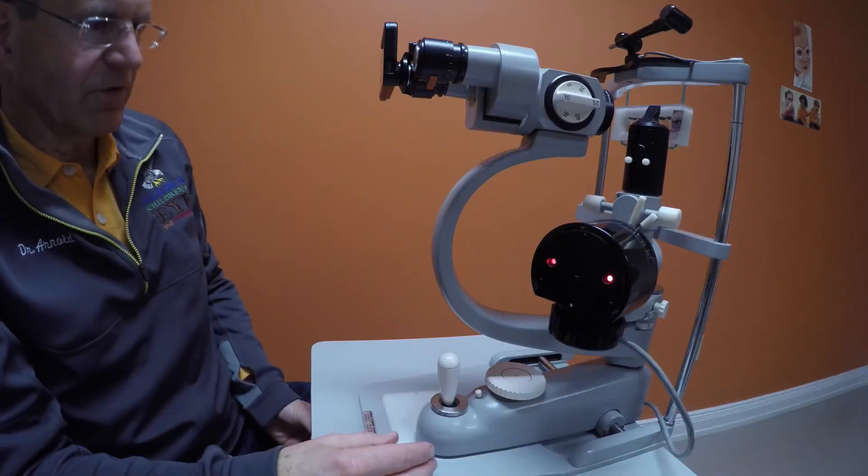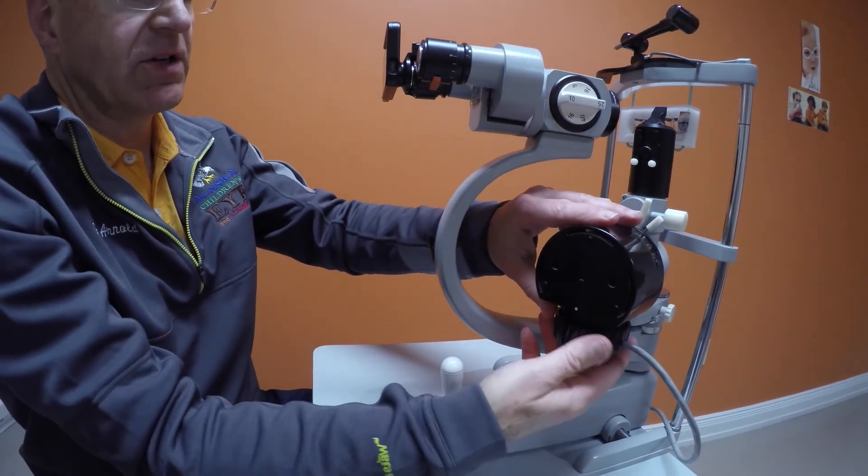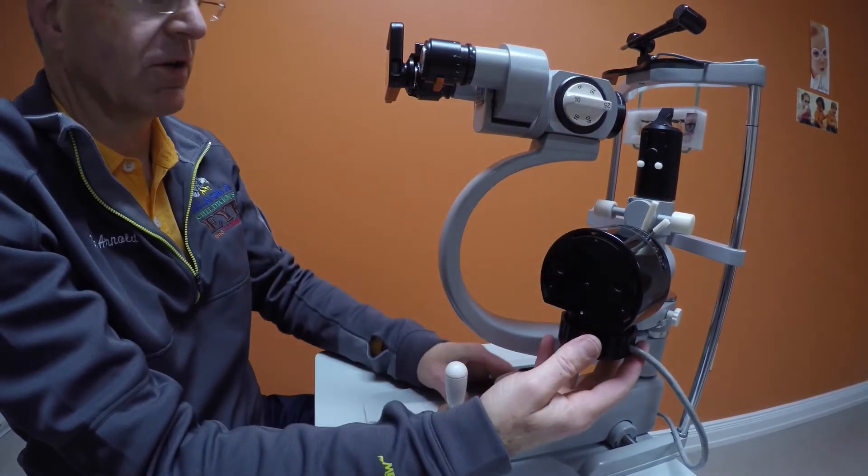Alright. From this point, we have the rheostat up, we have the beam width up. Turn it off. The bulb to the slit lamp can be changed in the middle of this housing on the slit lamp.